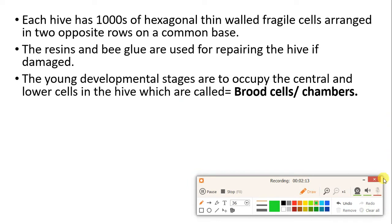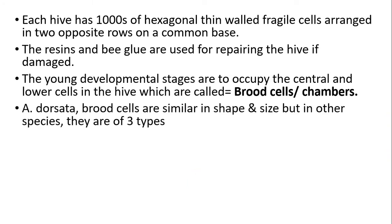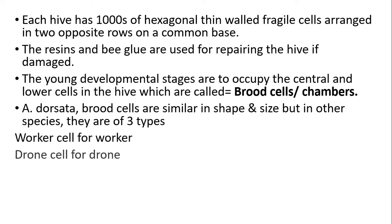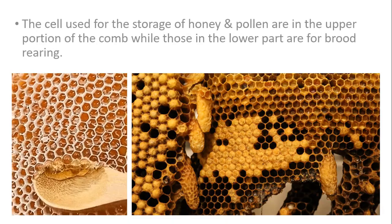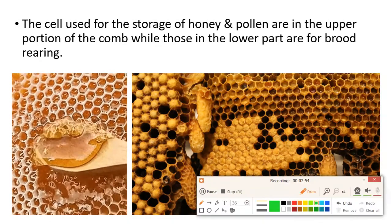In Apis dorsata specifically, the brood cells are all similar in shape and size. But in other species they are of three types: worker cells for workers, drone cells for drones, and queen cells for queens. Queen cells can only be used once, whereas worker cells and drone cells can be used a number of times.